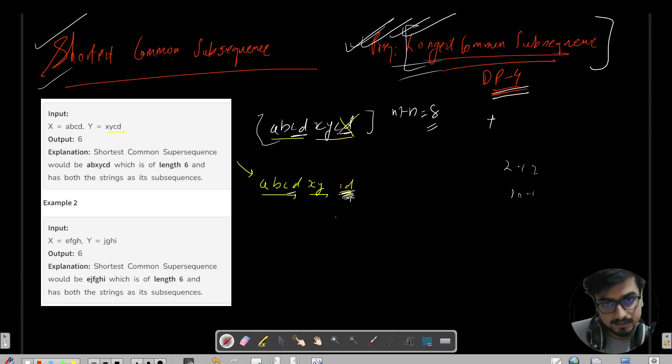Why are we bothered about CD coming after X and Y? Because the order is given. I need the same order in the order. The order of the characters present in the string I want the same order in my answer because it is a subsequence and not a substring. Subsequence has to maintain the order.